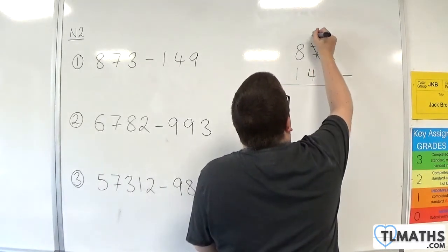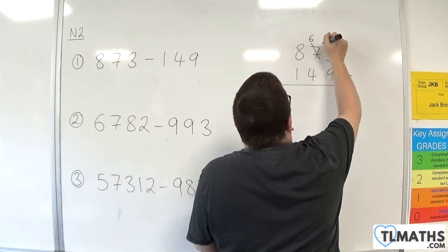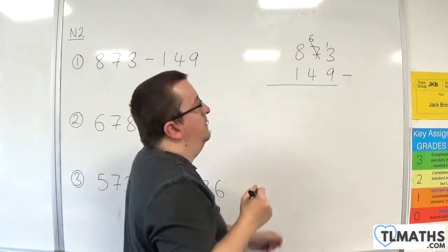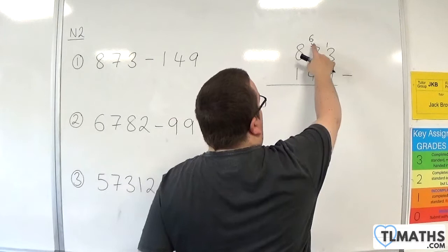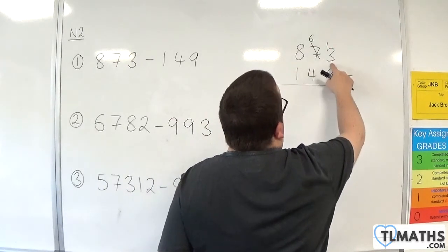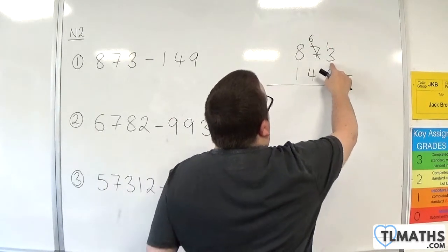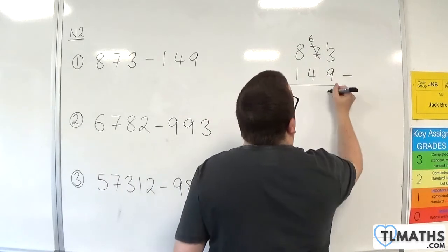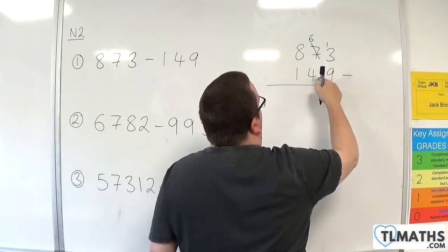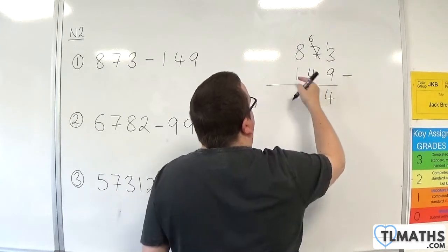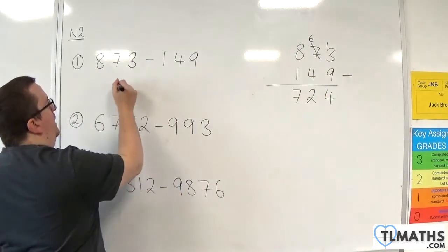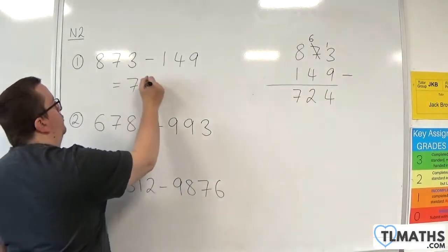So I cross it through, I borrow 1, and it becomes 6 there. So 7 becomes 6, and the 3 becomes 13. So 13 take away 9 is 4. 6 take away 4 is 2. 8 take away 1 is 7. So we have 724.